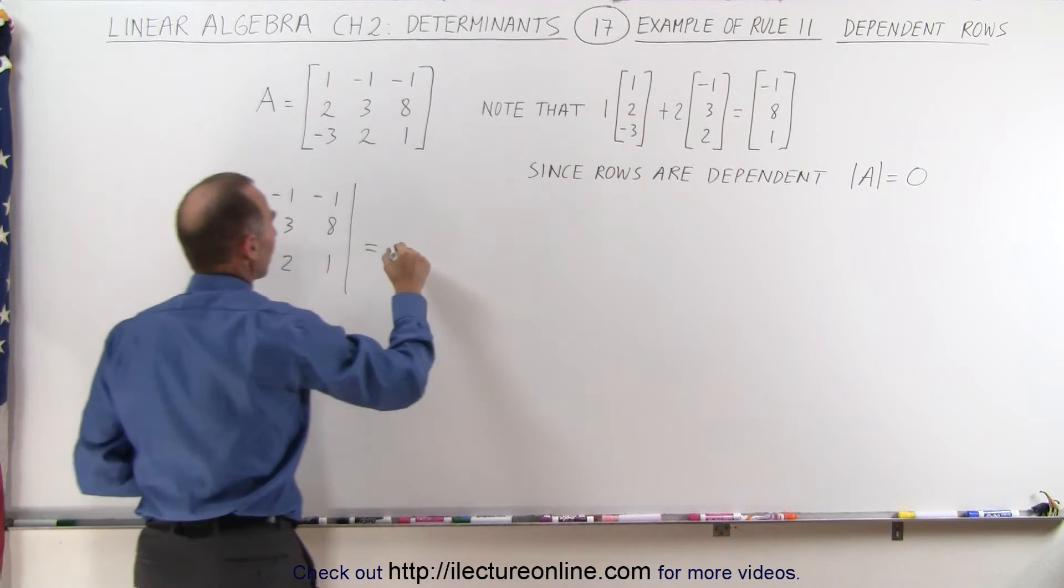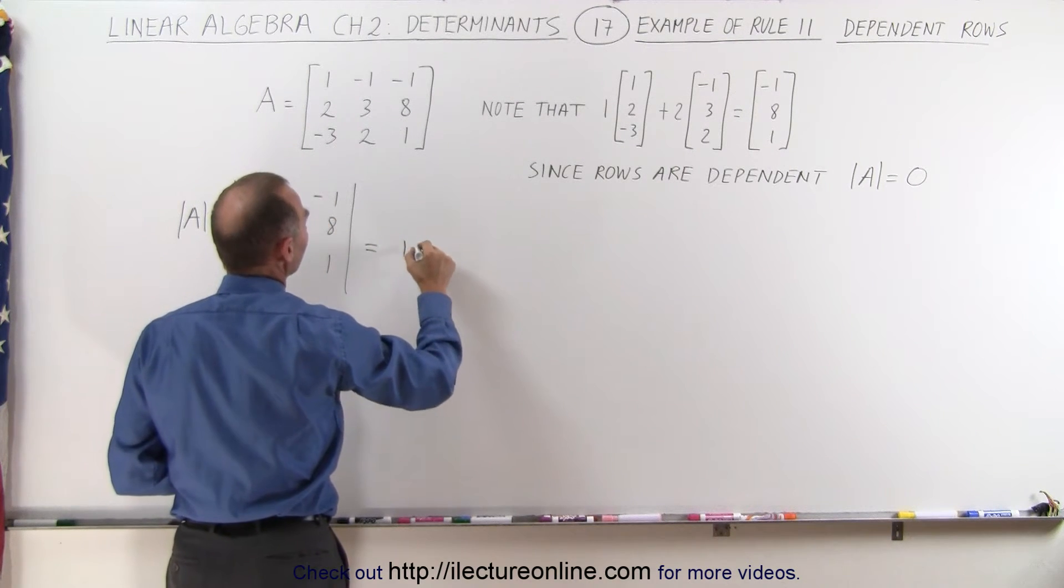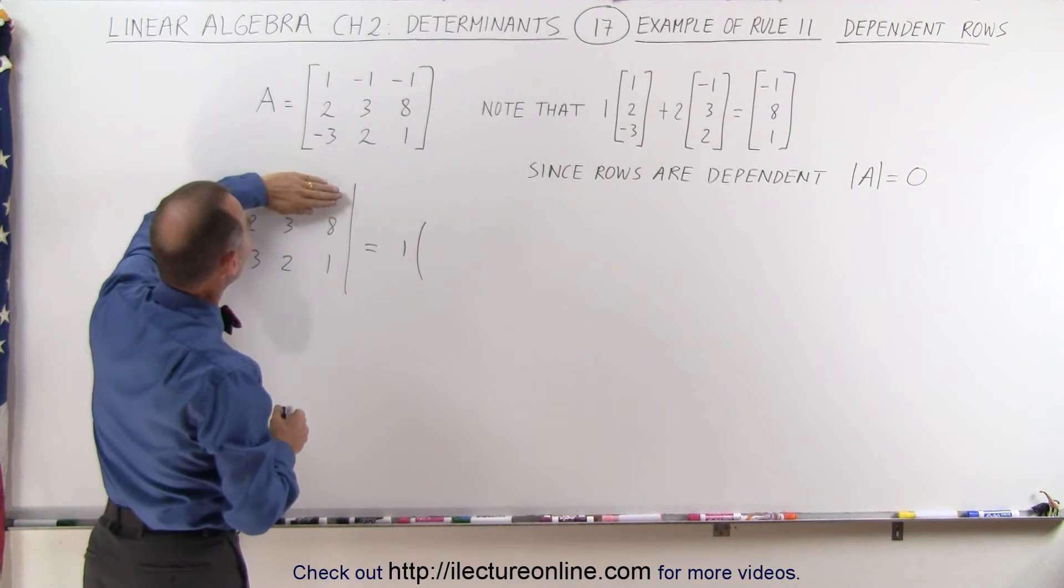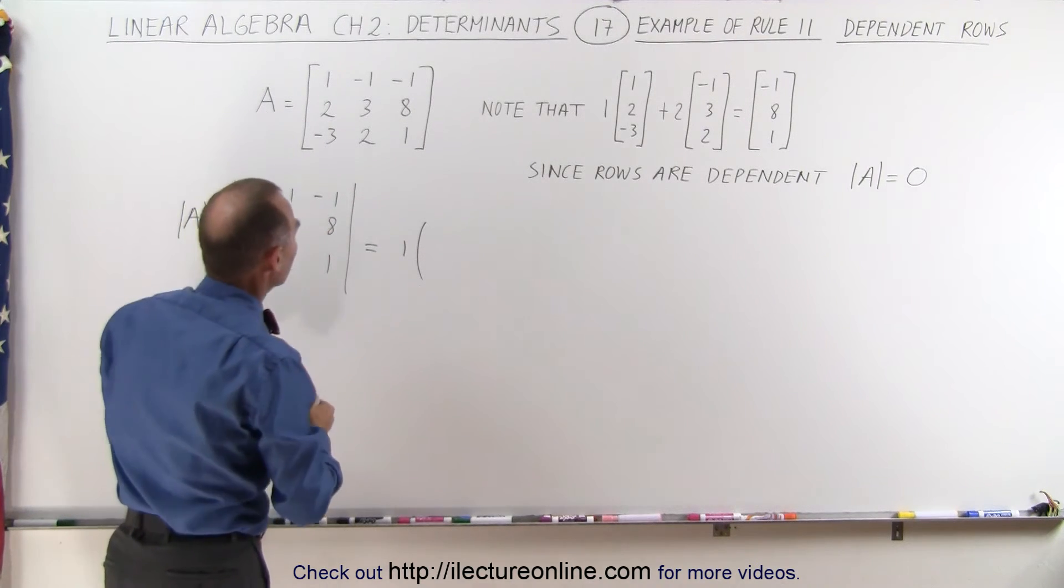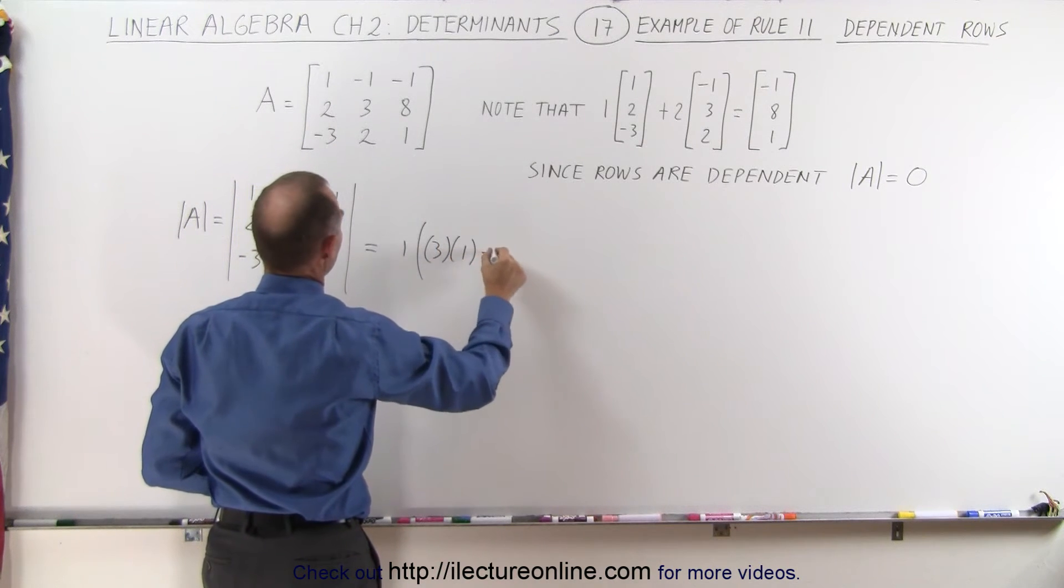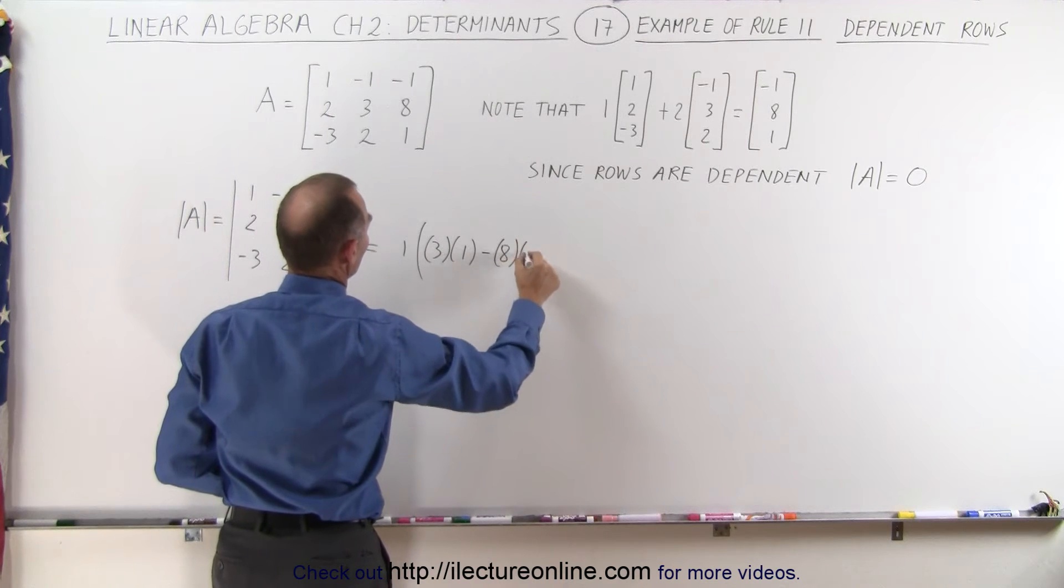We take the first element, 1, and we multiply times, of course we're going to get rid of this column and rid of this row, we end up with those four elements here, so we multiply 3 times 1 minus 8 times 2.